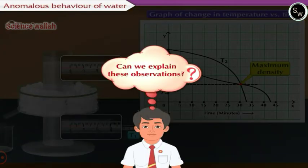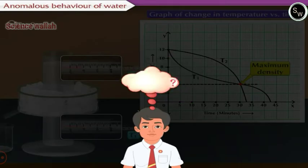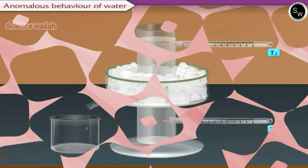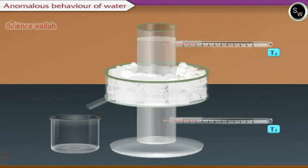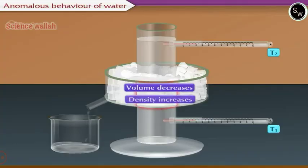Can we explain these observations? Yes. Initially, the temperature of water in the middle of the cylinder lowers due to the freezing mixture in the outer bowl. Since the temperature of this water decreases, its volume decreases and hence its density increases.